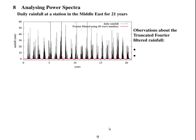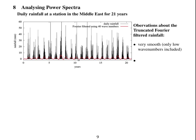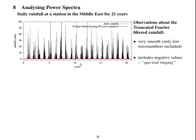Now we look at analysing power spectra. The black lines show daily rainfall at a station in the Middle East over 21 years, and the red line shows the Fourier-filtered data using the first 40 wave numbers. The data is very noisy and has a clear annual cycle. The Fourier-filtered data is very smooth because only low wave numbers are included, but it includes negative values — which rainfall never is — due to spectral ringing from representing discontinuities.